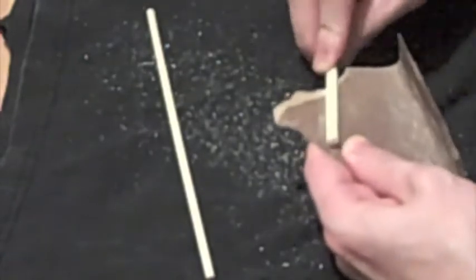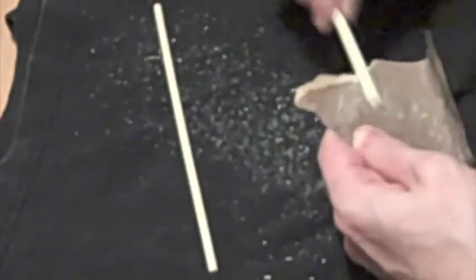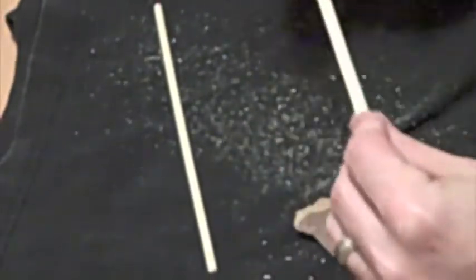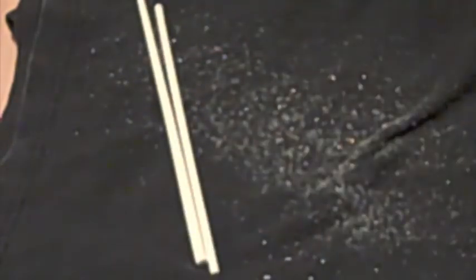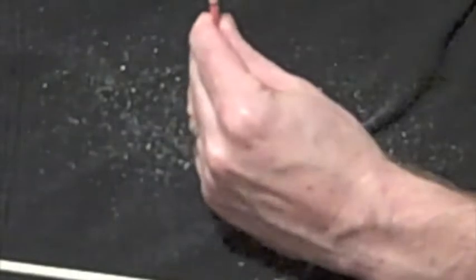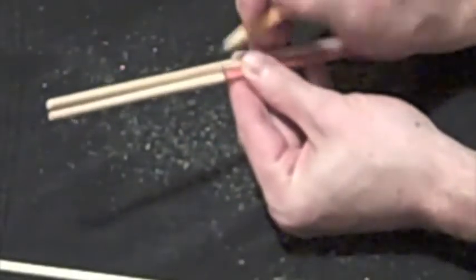You're also going to want to take your sandpaper and sand down the chopsticks so they're nicer and rounder and feel good in your hands. After you're done sanding, take a paper towel and buff off the excess dust.